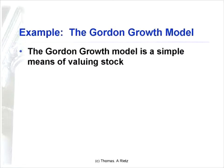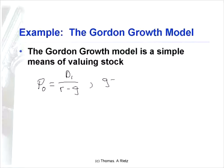So all of that description can be represented fairly easily mathematically: today's price P0 — P for price, 0 for today — equals next period's dividend D1 — D for dividend, 1 for next period — divided by R, the return investors demand, minus the growth rate they anticipate. The growth rate is forecast using the retention ratio rho (like a P without the little stick going up), times the return on equity of the firm. That's significantly simpler than the English representation.